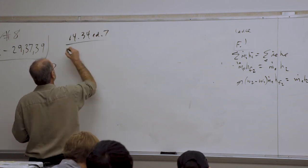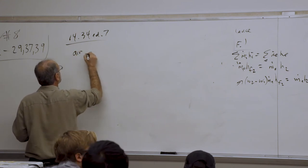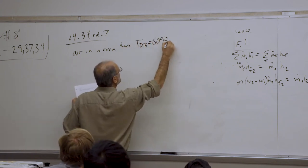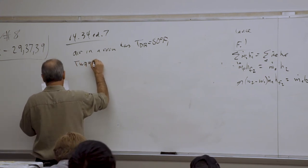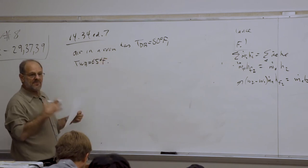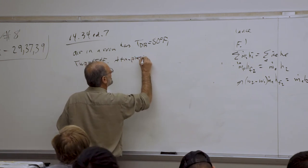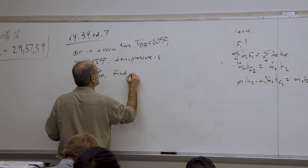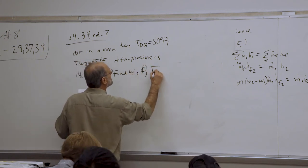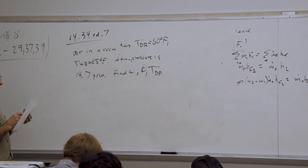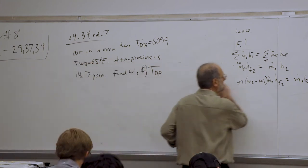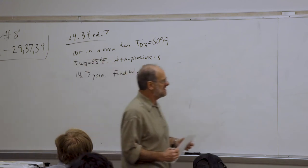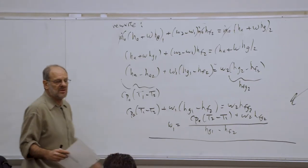Example 14-34 from the seventh edition of the textbook: air in a room has a dry bulb temperature of 80 degrees Fahrenheit and a wet bulb temperature of 65 degrees Fahrenheit. Atmospheric pressure is the standard 14.7 psia. We want to find the specific humidity, the relative humidity, and the dew point temperature.